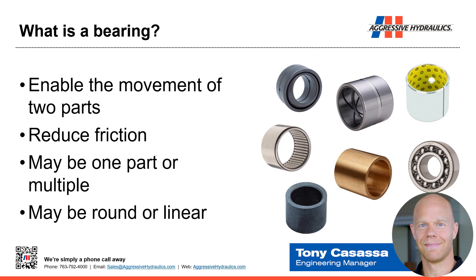So, what is a bearing? A bearing is something that enables movement between two parts. Thinking about cylinders and pin mounts — the cylinder is moving and whatever part of the machine it's part of is stationary, so there is movement relative between the two of them. A bearing is something that is intended to reduce friction. A bearing may be one part or it may be multiple parts. In our world, talking about pin mounts, we're talking about something that's round. But there's also potential that a bearing could be something that's linear — reducing friction and enabling the movement of something along a straight line.